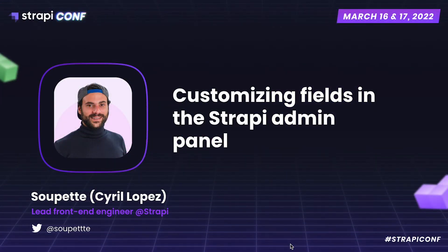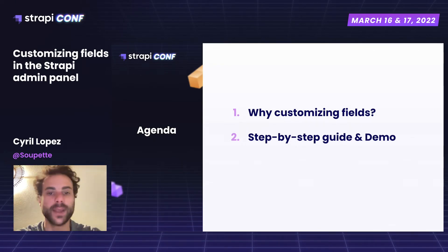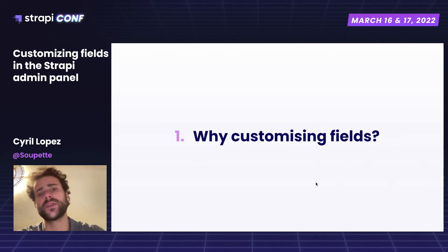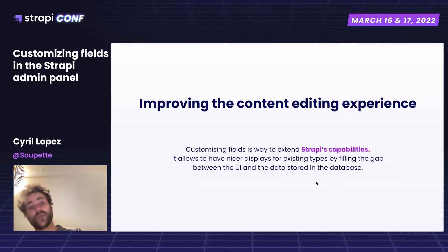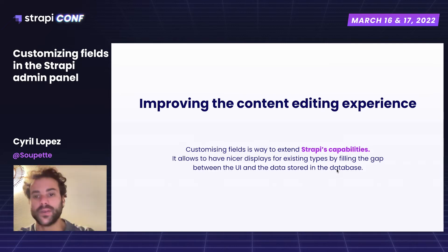Today in this talk, I am going to cover why customizing fields is important in your Strapi application, and then do a step-by-step guide to change a specific field in the content manager. Customizing fields is important because it allows us to improve the content editing experience and have a nicer display for existing types by filling the gap between the UI and the data stored in the database.